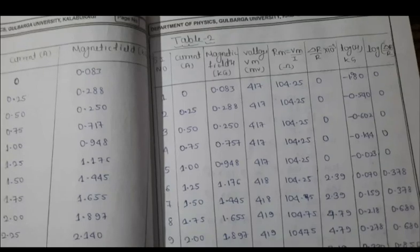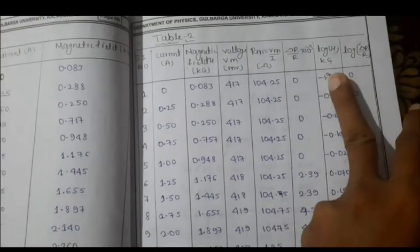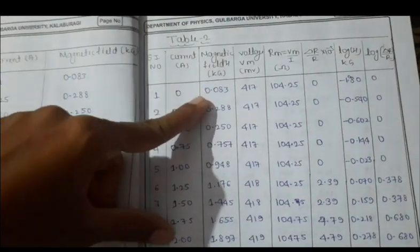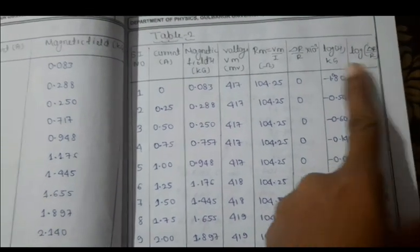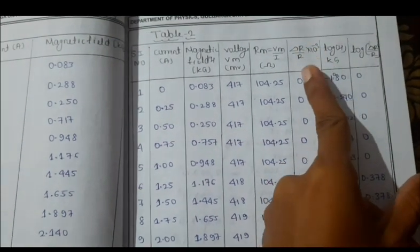Then take the log of H - next column log of the magnetic field - and last column log of this ratio delta R by R.